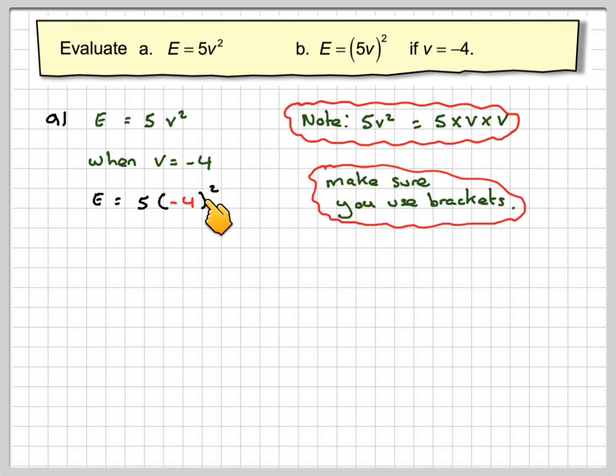Right, minus 4 squared means minus 4 times minus 4, which is 16. So this becomes 5 times 16, and 5 times 16 is 80.